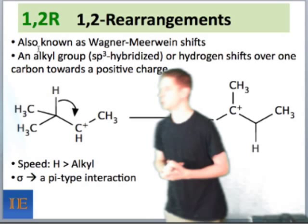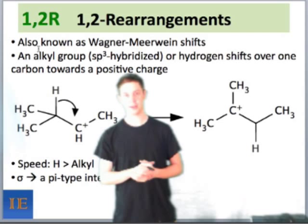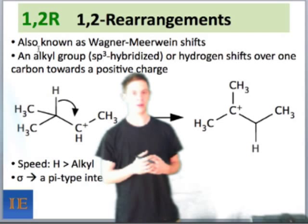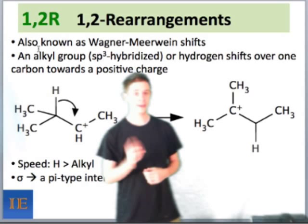In the product, notice that the bond has migrated to the right and the cation left behind is on the carbon where the CH bond originally was. Now, the relative speed of these rearrangements is very important because many times you have a choice between moving a hydrogen or moving an alkyl group.